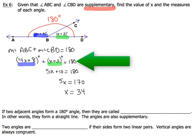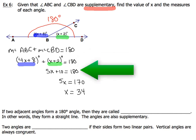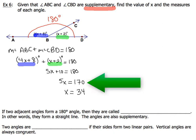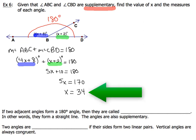We're going to substitute the values 4x plus 8 and x plus 2 for each one of the angles, respectively. Then we combine like terms to end up with 5x plus 10 equals 180. Using the subtraction property of equality, we get 5x equals 170. Last, we use the division property of equality to get x equals 34.